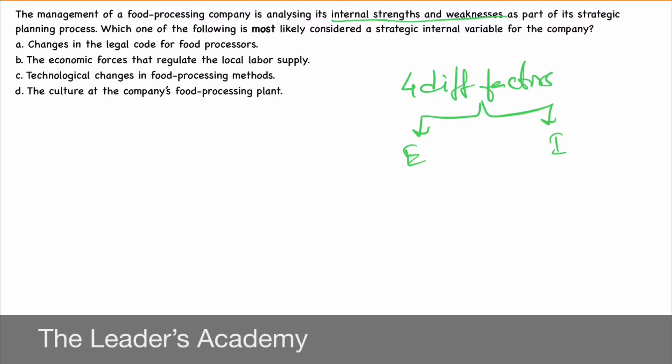First one: changes in the legal code for food processors. It's a legal code. Legal code is set by the government, and in no way can an organisation or a company control the government. That's why this will be an external factor — one through which a company gets affected and must comply with the legal code.